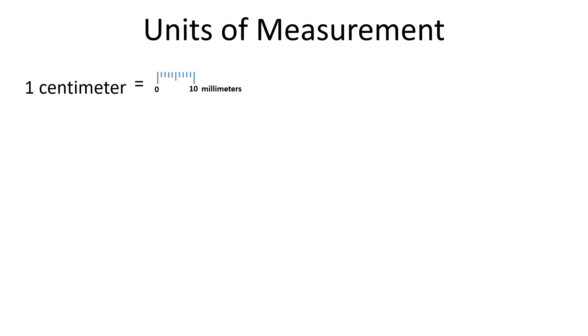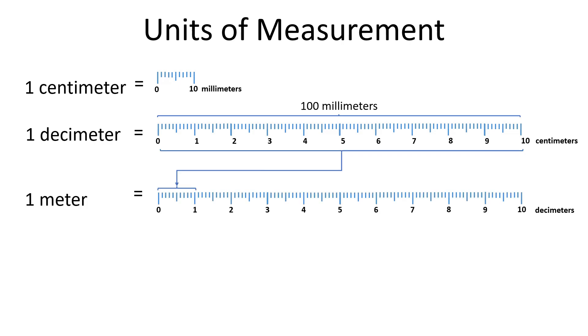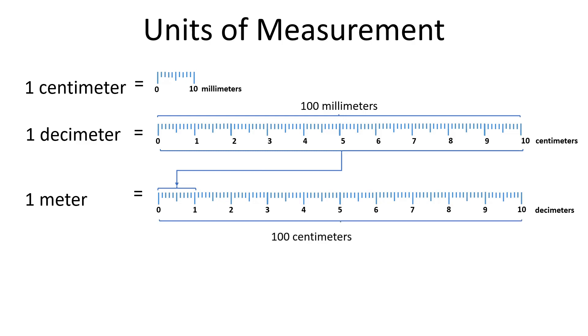Let's summarize what we have said so far about units of measurement. One centimeter is equal to 10 millimeters. One decimeter is equal to 10 centimeters, and is also equal to 100 millimeters. One meter is equal to 10 decimeters, 100 centimeters, and also 1,000 millimeters.